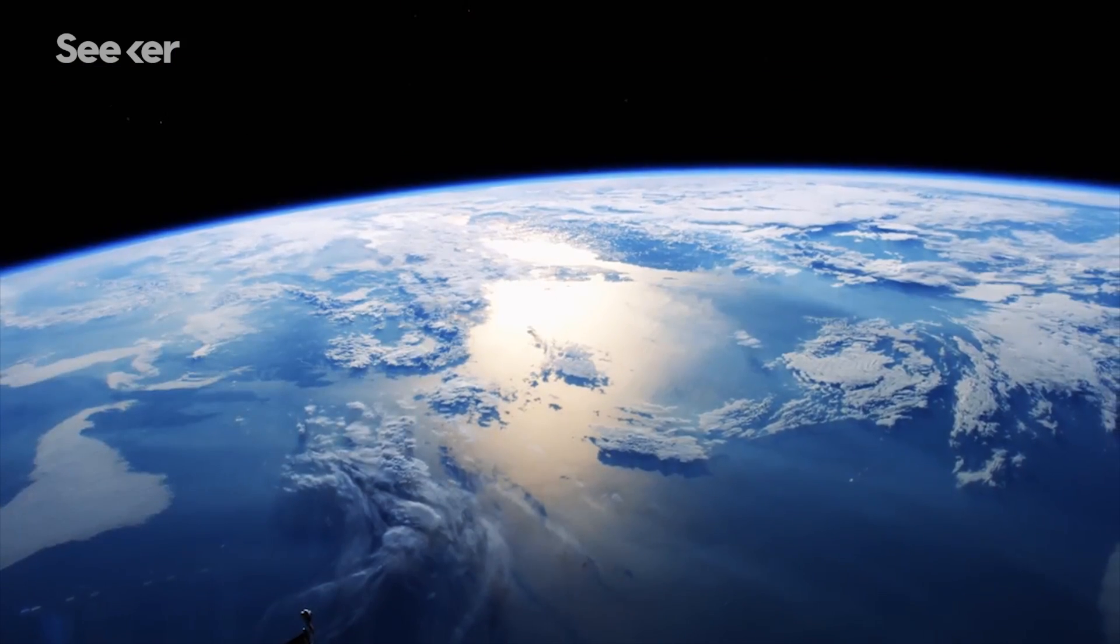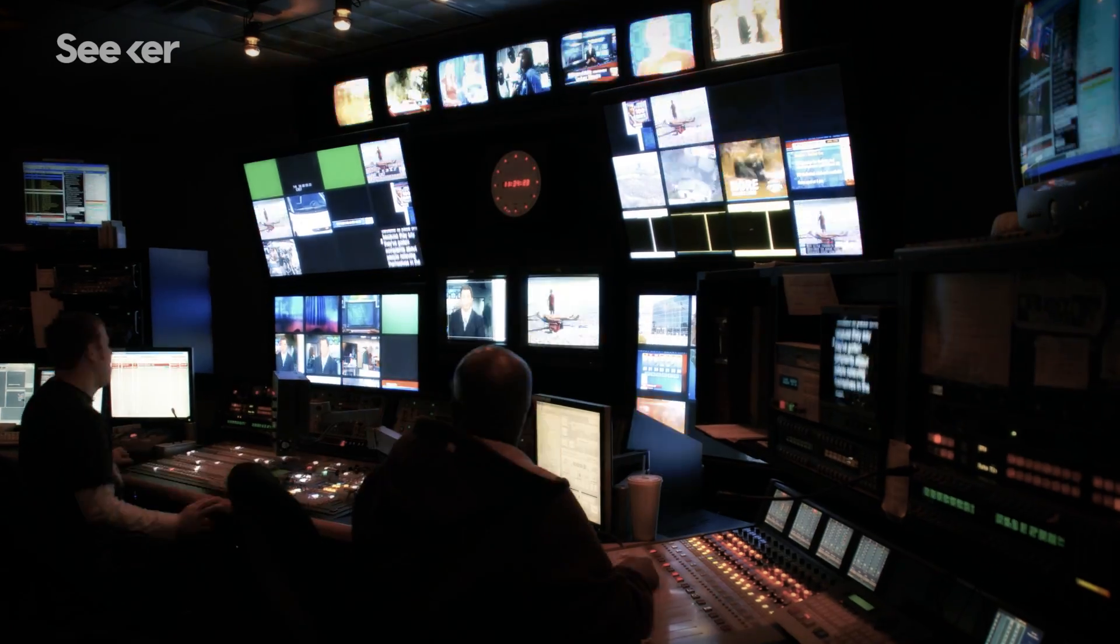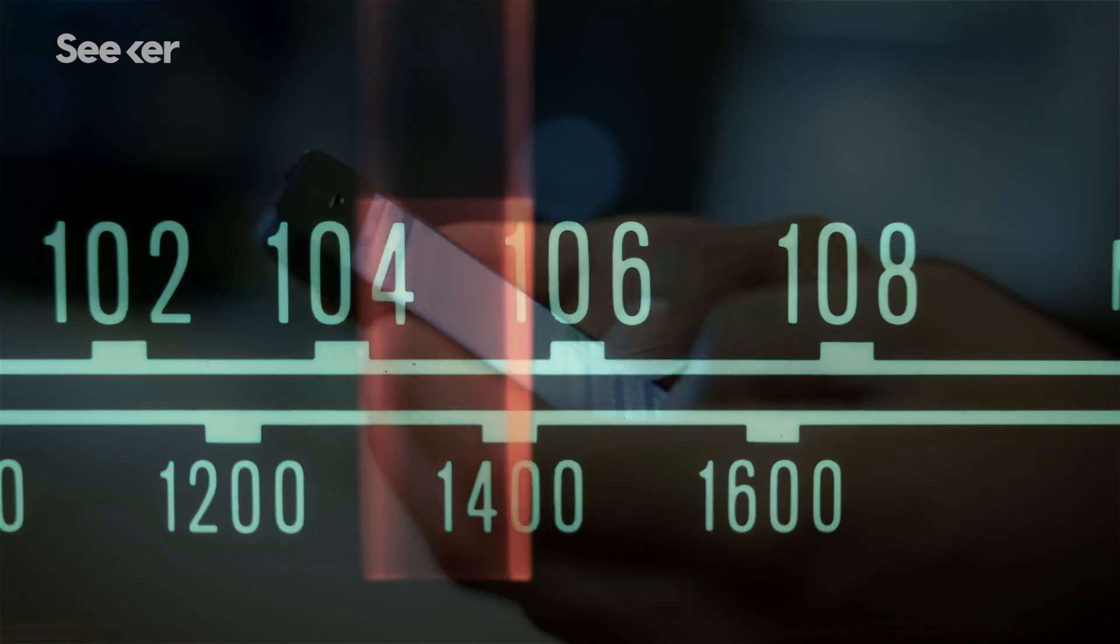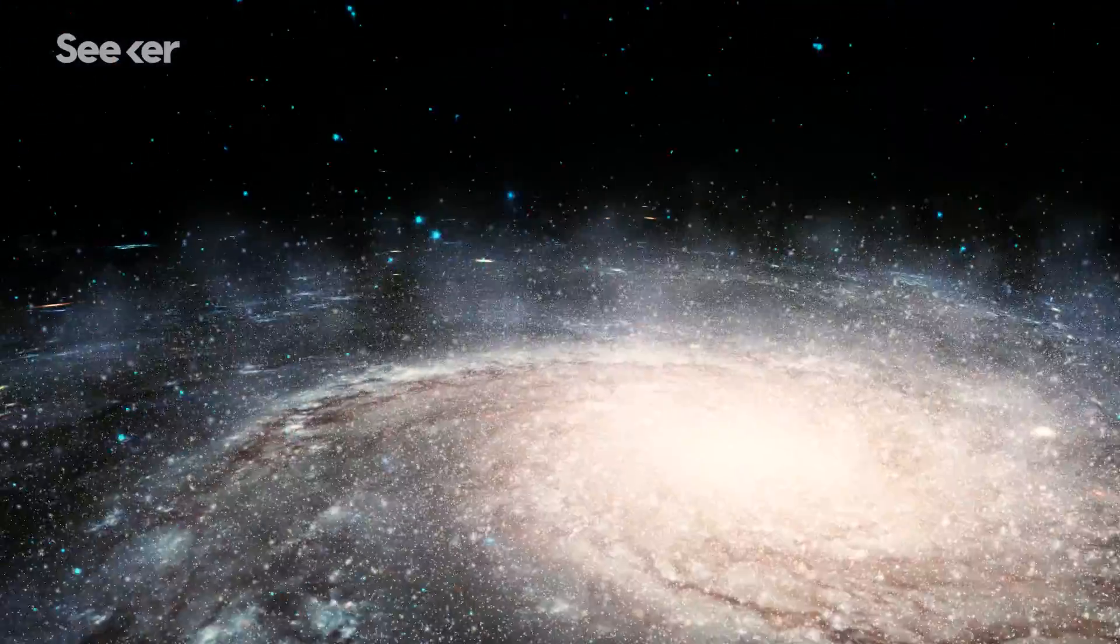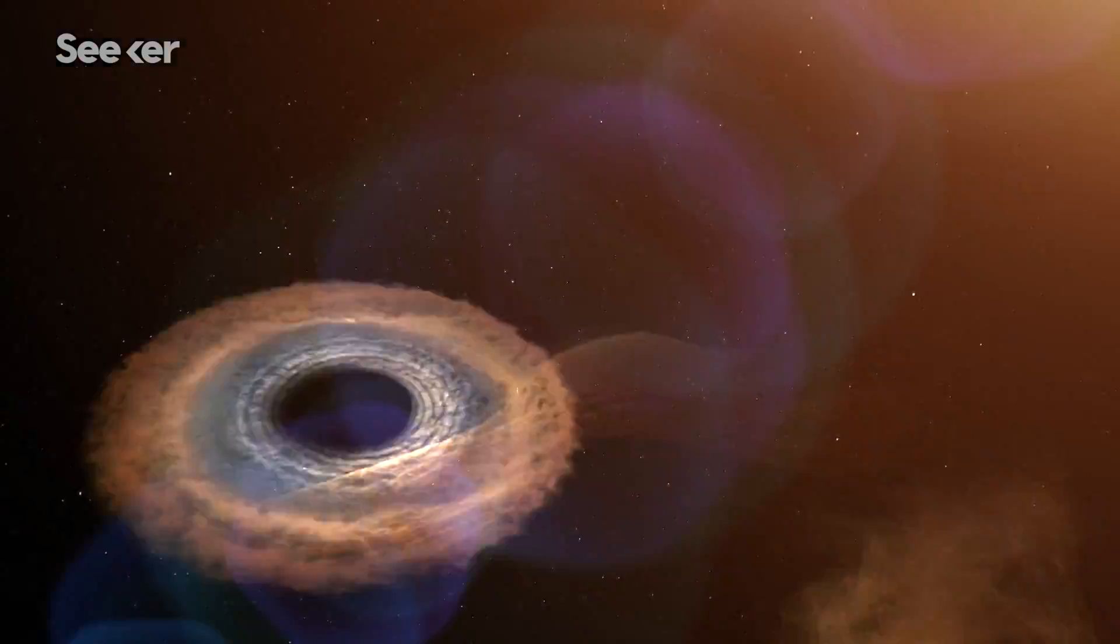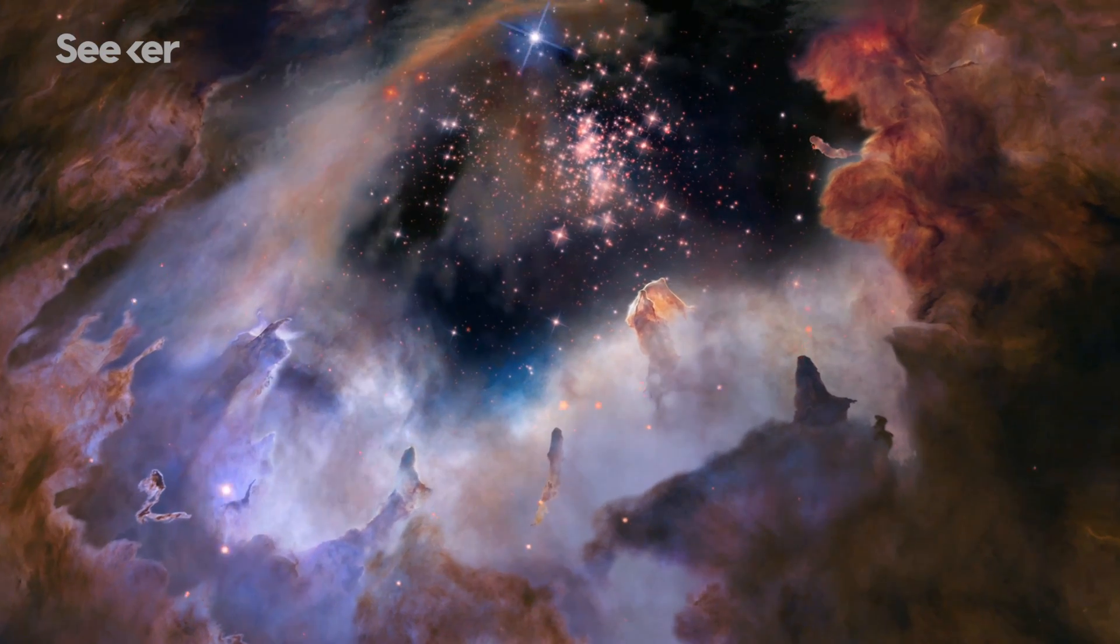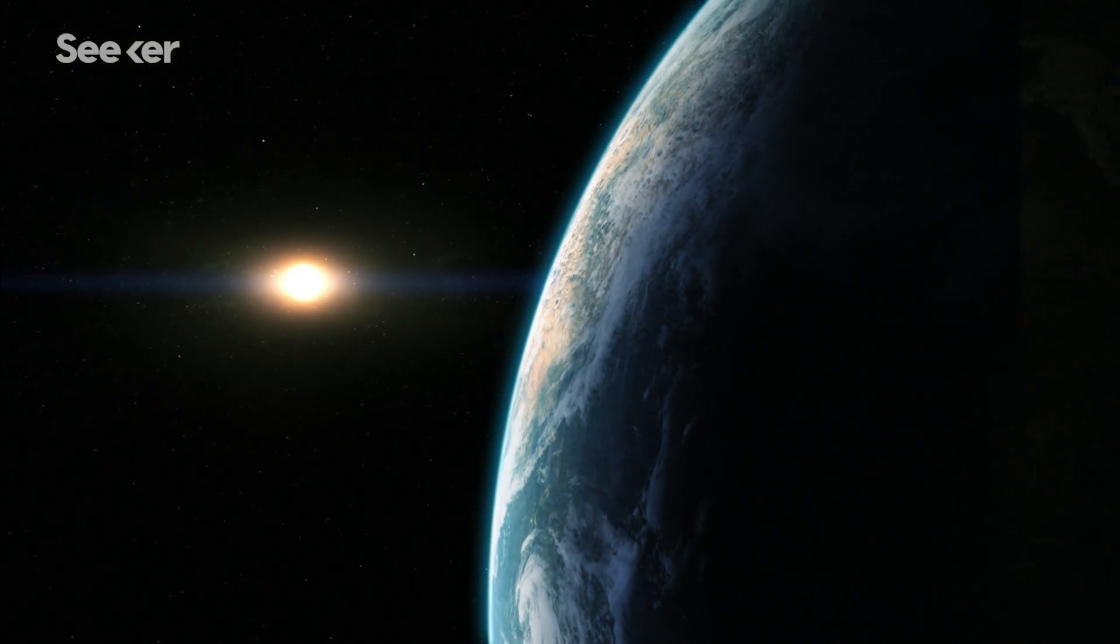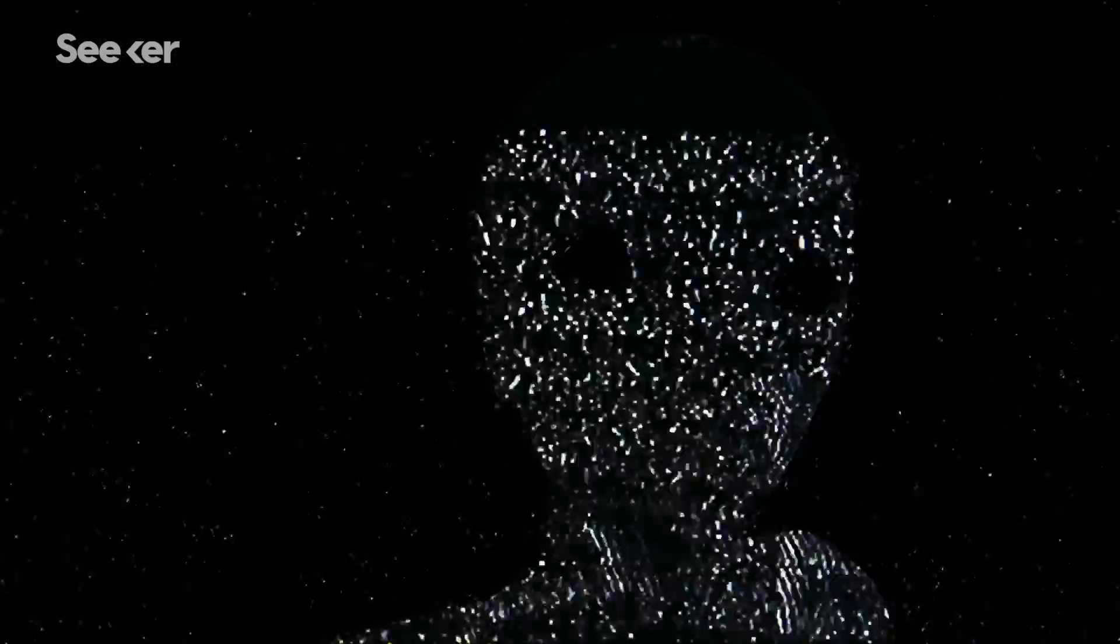Earth can be a really loud place if you're searching for an extraterrestrial signal. Television broadcasts, radio transmissions, cell phones - we're beaming noisy signatures of our technology into space all the time. But we're not the only noisemaker in the universe. Black holes crashing into each other, fast radio bursts, and other celestial phenomenon create lots of astronomical background noise. So if there are extraterrestrials out there, how do we find the signal through all that noise?